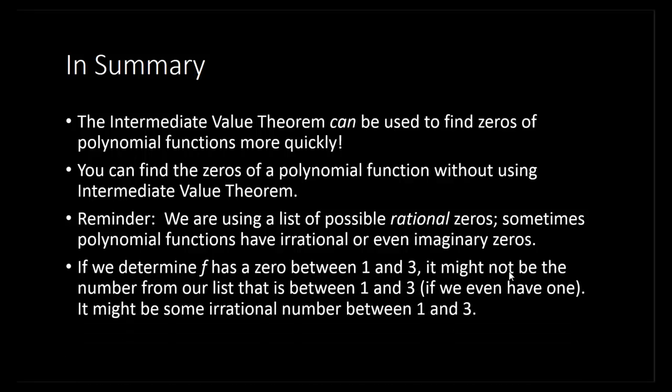So if our work tells us that f has a zero between 1 and 3, like in our first example, it might not be a number on our list between 1 and 3. Or in some cases, there might not be a number at all on your list between 1 and 3 — all that means is f has an irrational zero between 1 and 3. So even if we see an opportunity to apply the Intermediate Value Theorem, it still might not help us. Don't think that this always works. It is just something that can be helpful and save you some time — all we're doing is changing the order in which we try numbers on our list for synthetic division. But it is worth trying, as in the second example where skipping ahead to try 9/2 saved us quite a bit of time. Hopefully you found this helpful.